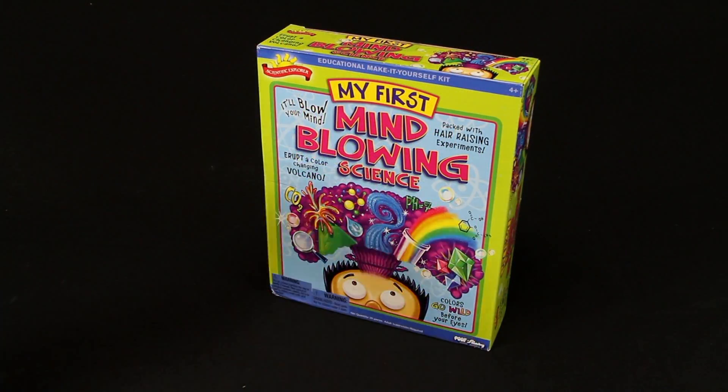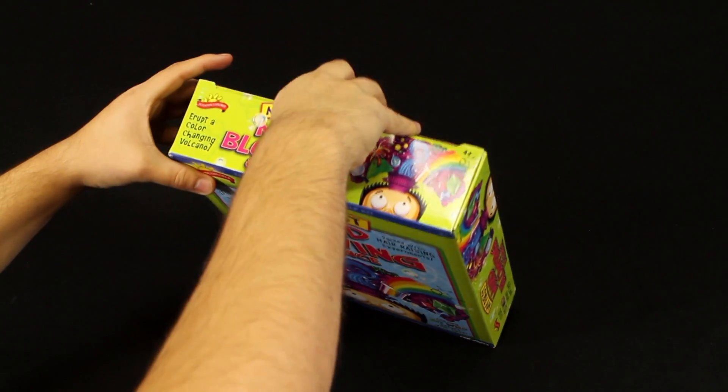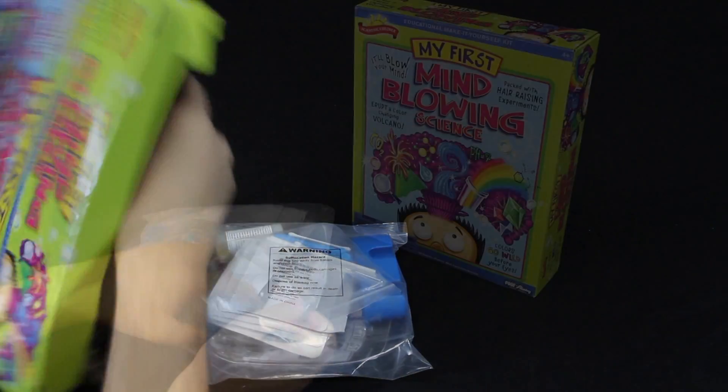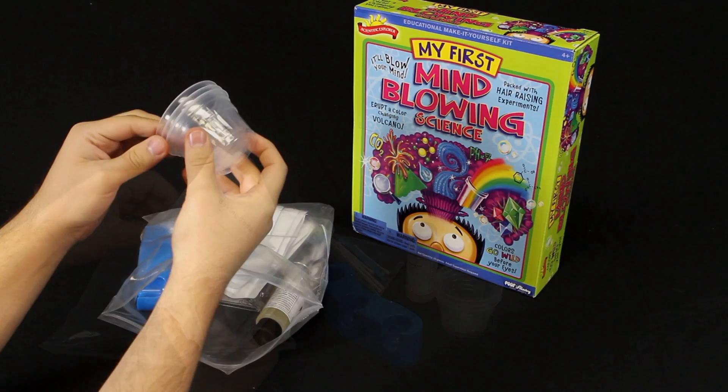This smartly designed science kit allows young scientists to perform several amazing science experiments that range from erupting a color-changing volcano to growing colorful, jiggly crystals.